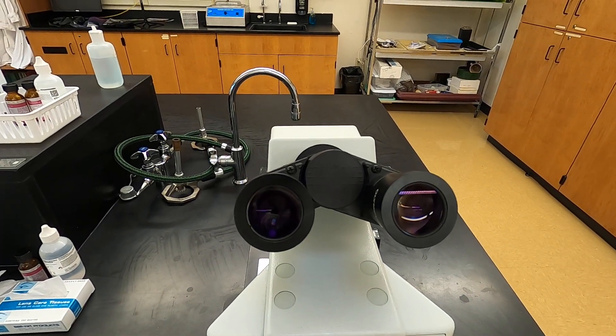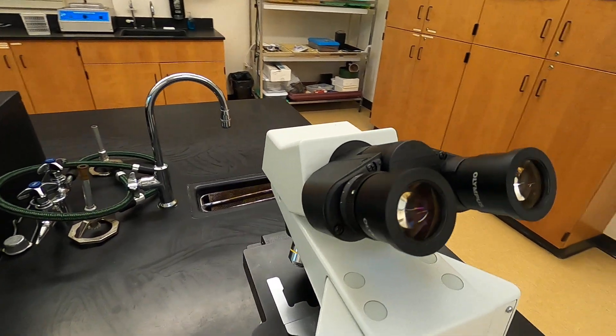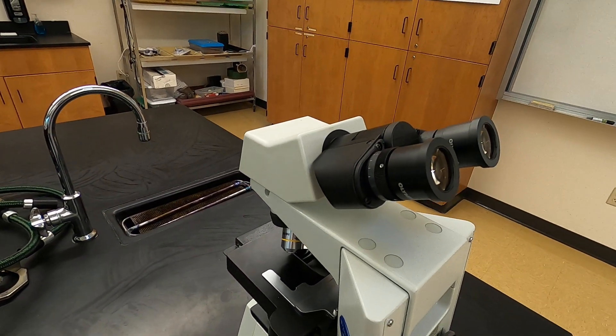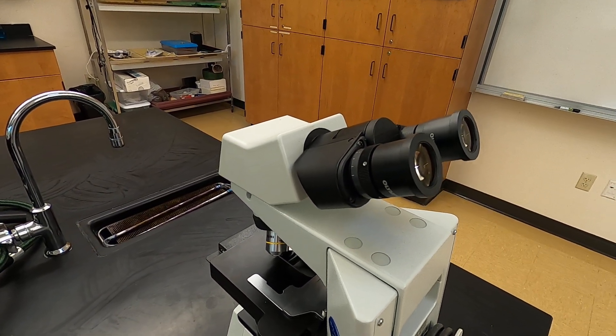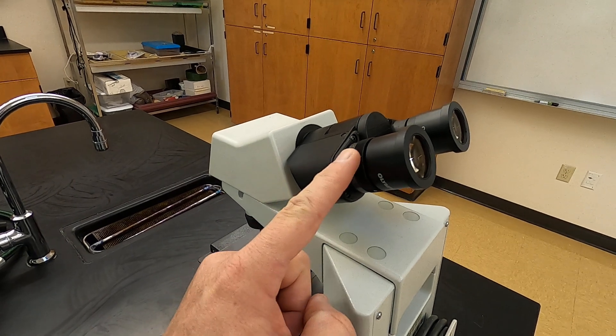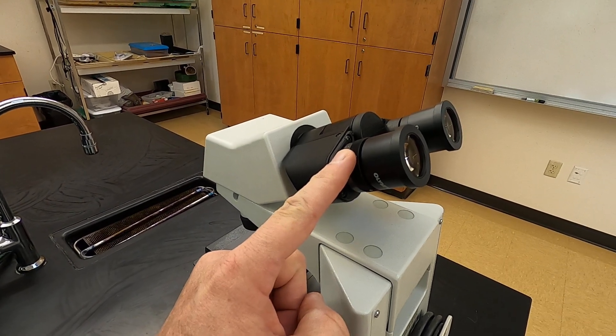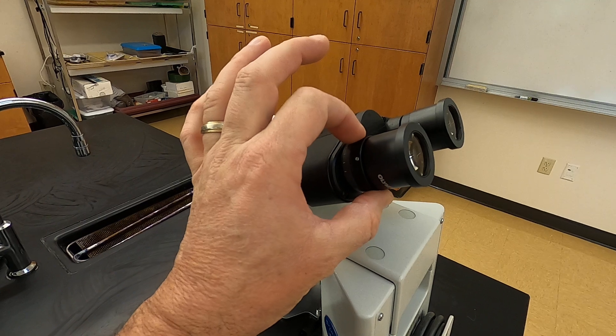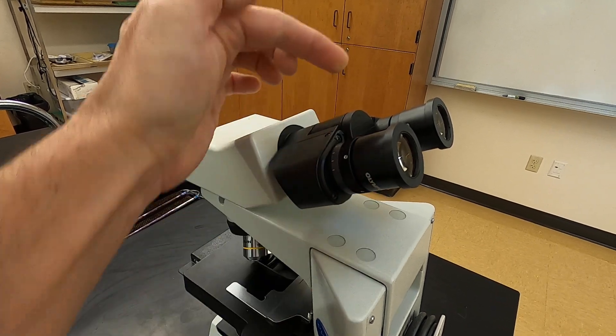In addition to setting the interocular distance, we also need to account for differences in vision between the left and the right eyes. This microscope has what's called a diopter ring, and this is used for adjusting for the vision between your left and your right.